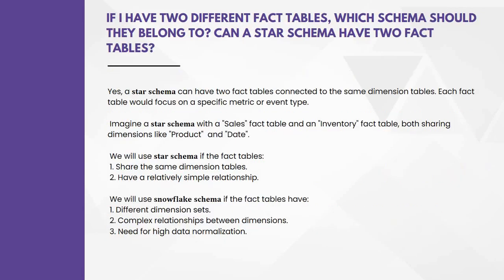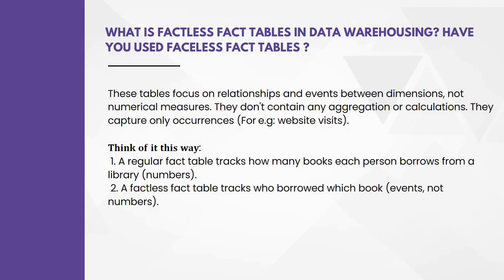The next question: if I have two different fact tables, which schema should they belong to — can a star schema have two fact tables? Yes, a star schema can have two fact tables connected to the same dimension tables. Each fact table would focus on a specific metric or event type. For example, a sales fact table and an inventory fact table both sharing dimensions like product and date. Use a star schema if the fact tables share the same dimension tables and have a relatively simple relationship. Use a snowflake schema if the fact tables have different dimension sets, complex relationships between dimensions, and a need for higher data normalization.